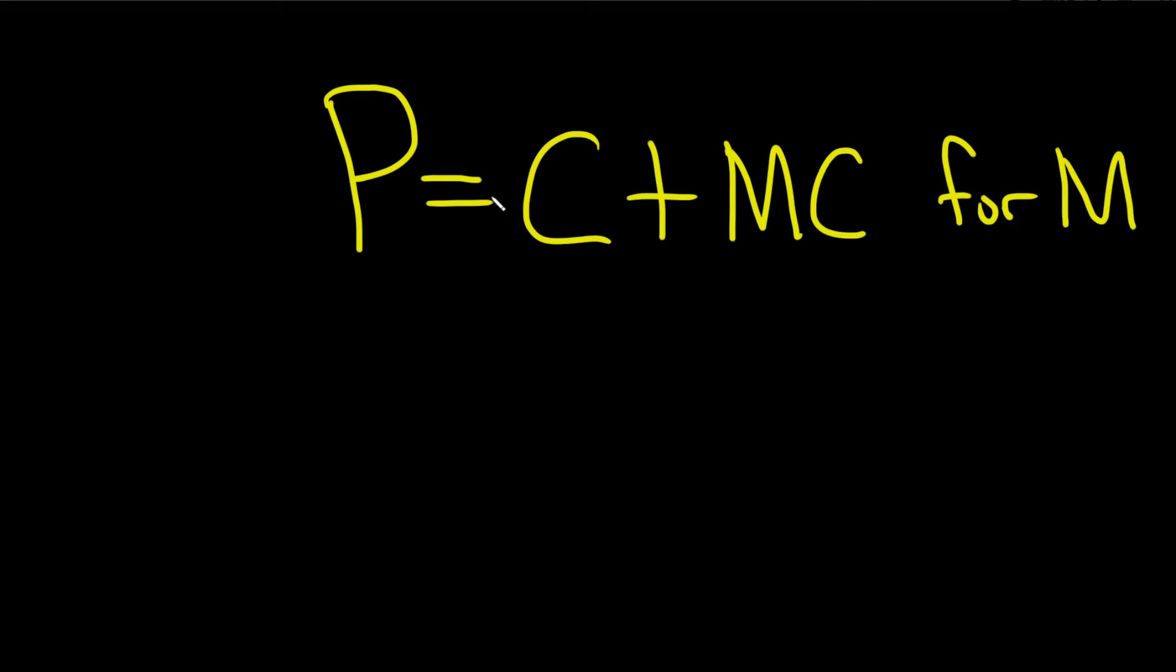We'll start by getting rid of the C. So this is actually a positive C, so to get rid of it we'll subtract. So minus C minus C. These go away. So we get P minus C equals, and then we have our MC.